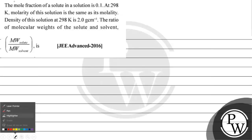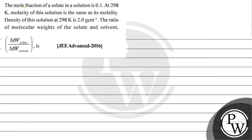Let's read this question. The question says mole fraction of a solute in a solution is 0.1 at 298 Kelvin. Molarity of the solution is same as its molality. Density of the solution is 2 point something grams per centimeter cube. The ratio of molecular weights of the solute and solvent is to be found. The key concept for this question is molality and molarity.